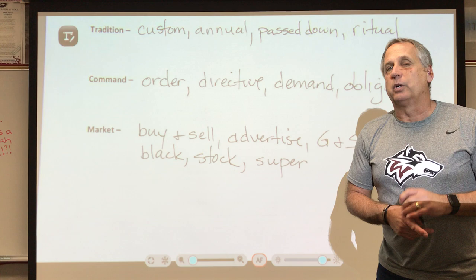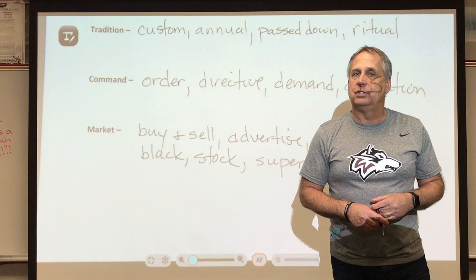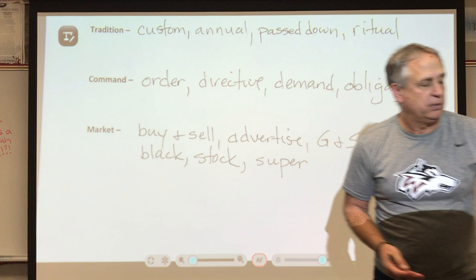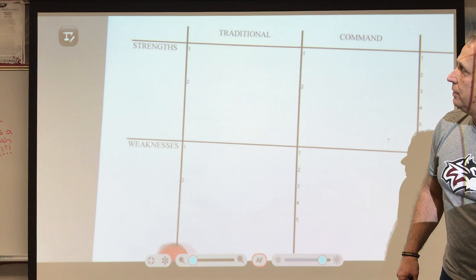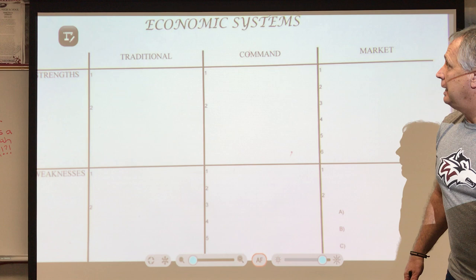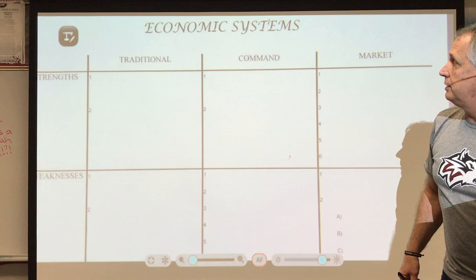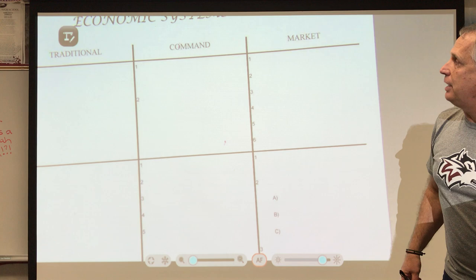What we're going to do is quickly go through and talk about the advantages and disadvantages of each of these different types of economies. You should have your piece of paper out — whether you printed it or are writing it down. It has the three types of economies — traditional, command, and market — and we're going to put down their strengths and weaknesses.